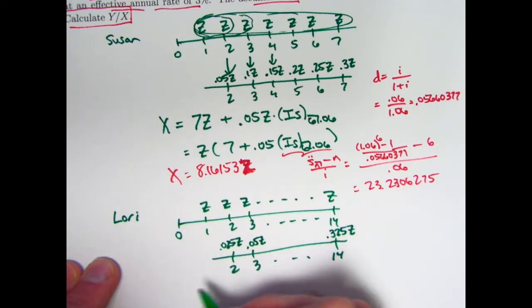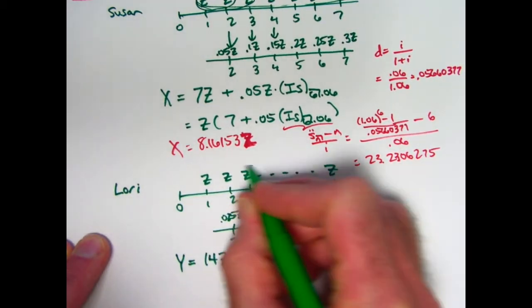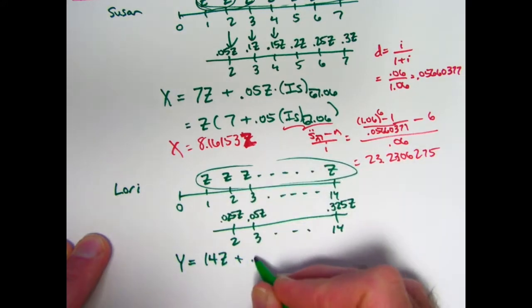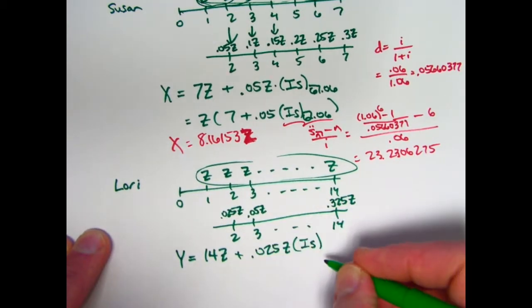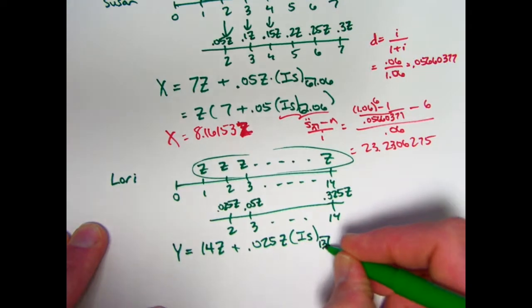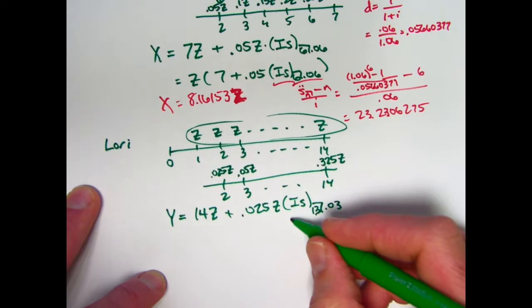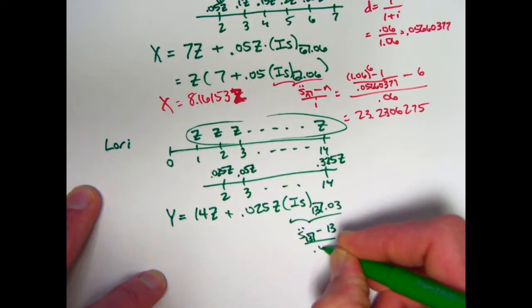So what is Y here for Lori? What is her future value? It's 14Z from the 14 deposits up here, plus 0.025Z times IS. How many of these payments are there? 14 minus 2 plus 1 is 13. There's 13 payments there at an interest rate of 0.03. Let's calculate this.